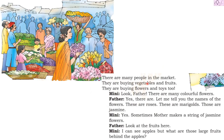There are many people in the market. They are buying vegetables and fruits. They are buying flowers and toys too. This is the market where Mini's father sells all the vegetables. Other than vegetables, lots of other things are also sold here — for example, flowers and toys and fruits. Mini says, 'Look father, there are many colorful flowers!'